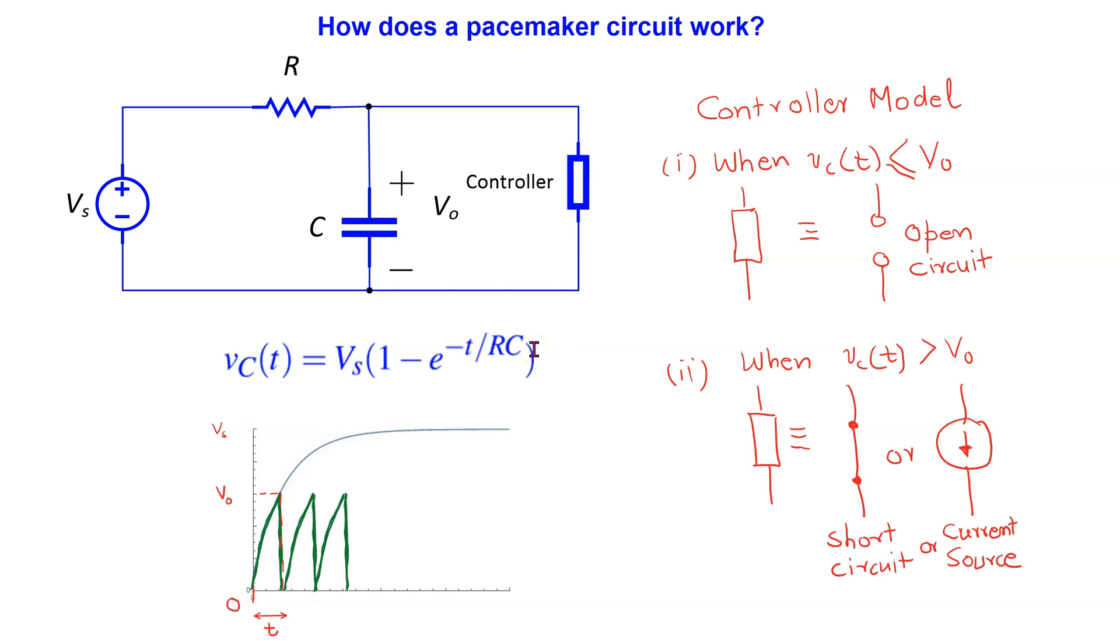In its simplest form, a pacemaker consists of a first-order RC circuit and a controller. When the voltage source is connected across an RC circuit, the capacitor starts charging and the voltage across the capacitor starts increasing towards Vs. The charging time is governed by the time constant. Initially the controller behaves like an open circuit, allowing the capacitor voltage to increase towards Vs.